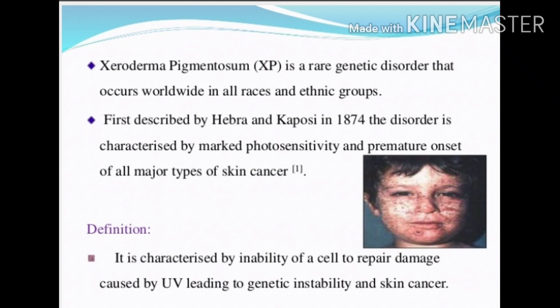What do you mean by Xeroderma Pigmentosum? It is a rare genetic disorder that occurs worldwide in all races and age groups. First described by Hebra and Kaposi in 1874. The main symptoms of this disorder are higher photosensitivity and premature onset of all major types of skin cancer. These are the two main characteristics of this disease.